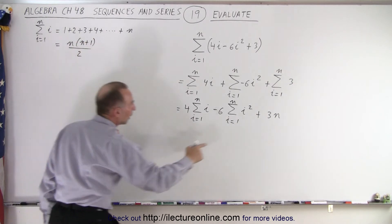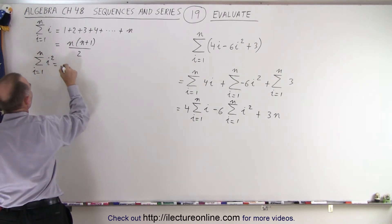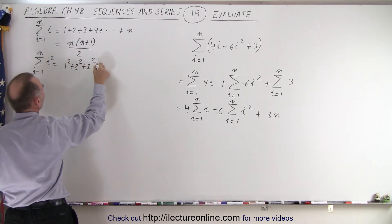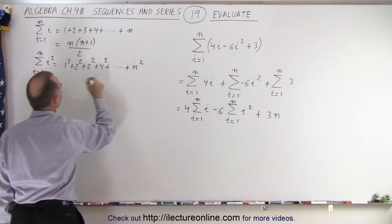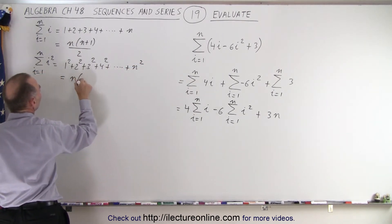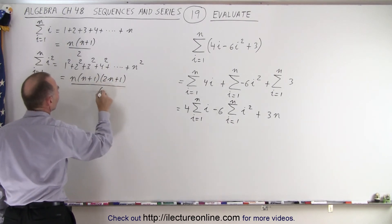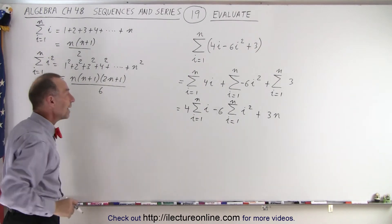And likewise, the sum from i equals 1 to n of i squared equals 1 squared plus 2 squared plus 3 squared plus 4 squared all the way up to plus n squared. And that can be written as n times (n plus 1) times (2n plus 1) all divided by 6. And that's why I told you memorize those because they will come in handy.